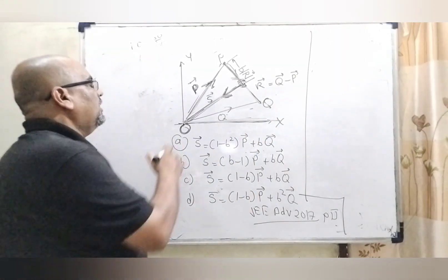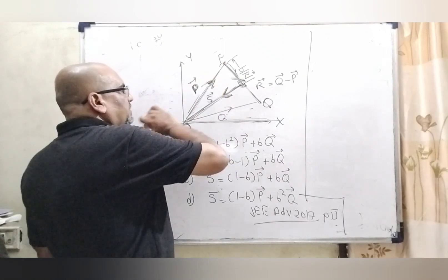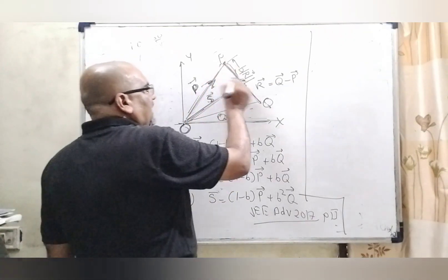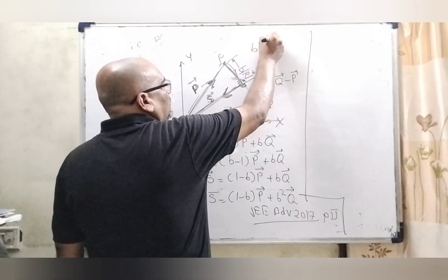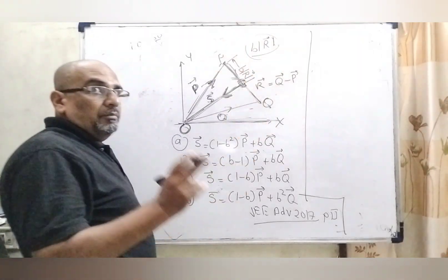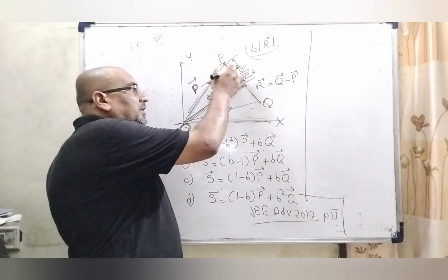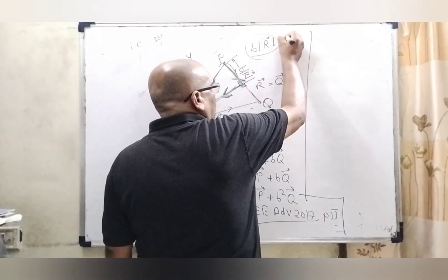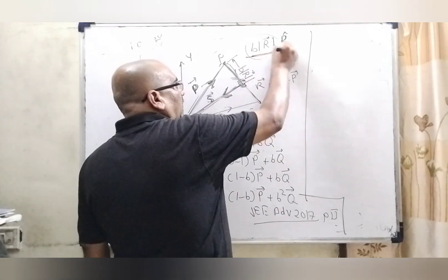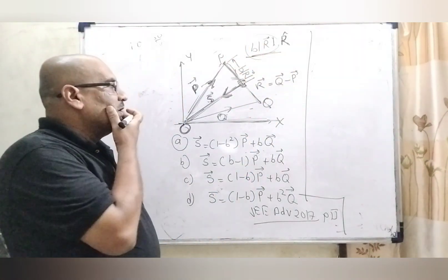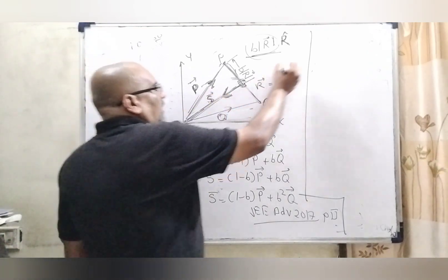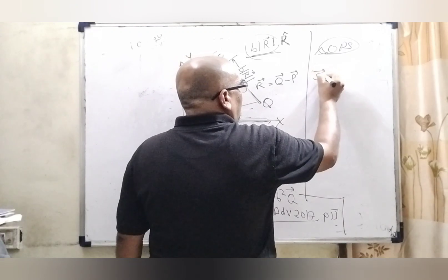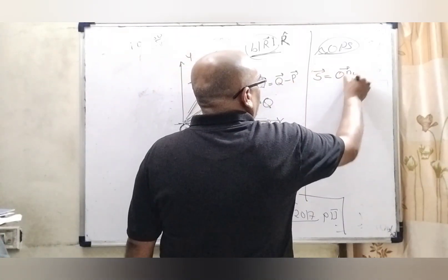In this question, we have given that OP vector has magnitude P, and OQ is Q vector. PS is given as B times the modulus of R vector. The modulus of R is a scalar value, but before applying the vector addition law, we need to convert PS into a vector form by multiplying by the unit vector. By applying the triangle addition law in triangle OPS, S vector equals OP vector plus PS vector.